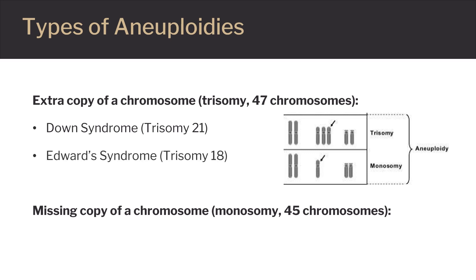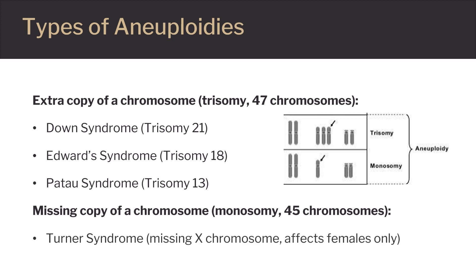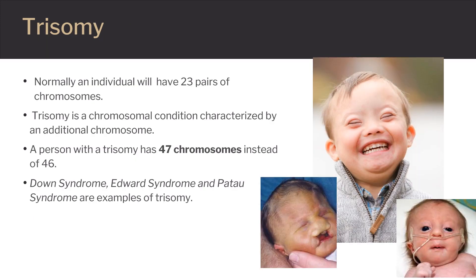Trisomy 18, also known as Edwards syndrome, and trisomy 13, also known as Patau syndrome. The other type of aneuploidy happens when a person is missing a copy of a chromosome, called monosomy. Their total chromosome count equals 45. A common condition that is the result of monosomy is Turner syndrome. Trisomy means that the affected person has three copies of a given chromosome instead of the expected two. Down syndrome, Edwards syndrome, and Patau syndrome are the most common forms of trisomy.